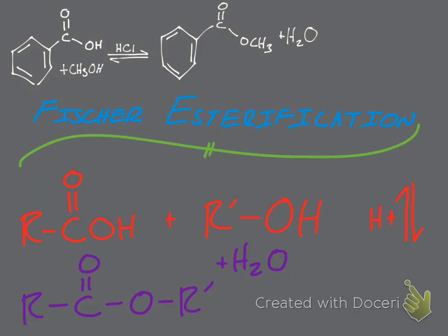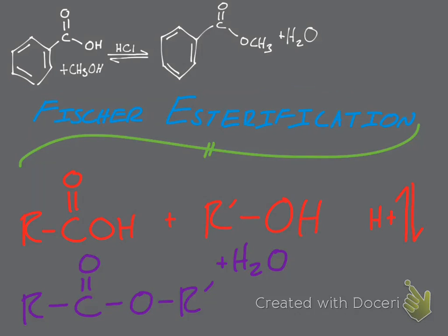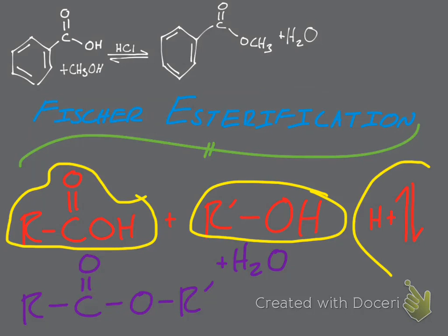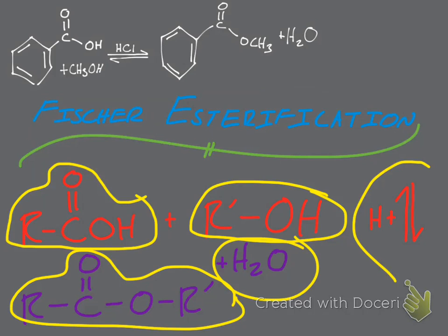In this video I would like to walk us through the mechanism for a sample Fischer esterification reaction. First, let's talk about what exactly a Fischer esterification is and the general form that all of them take. Fischer esterification is simply a method for the preparation of ester compounds. The general form is: a carboxylic acid and an alcohol reacted in H⁺ to yield the ester and some water.